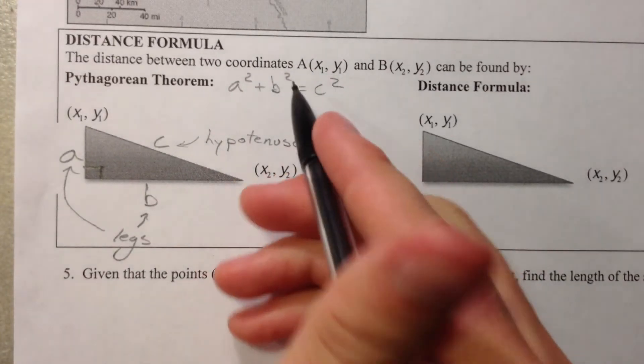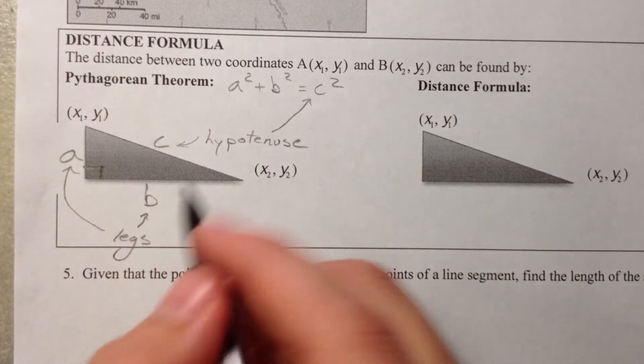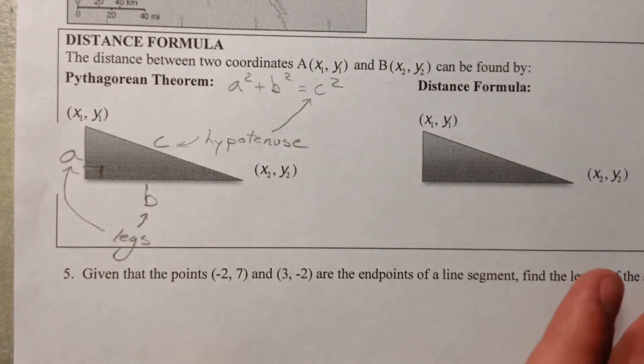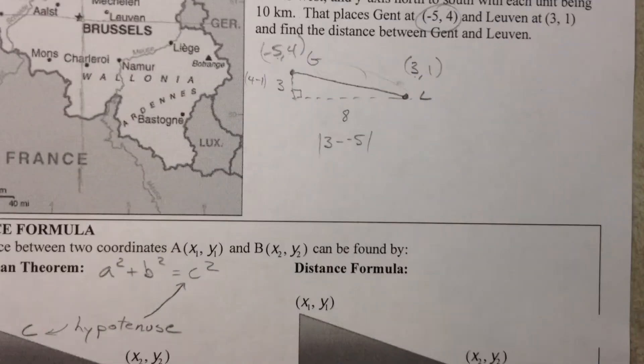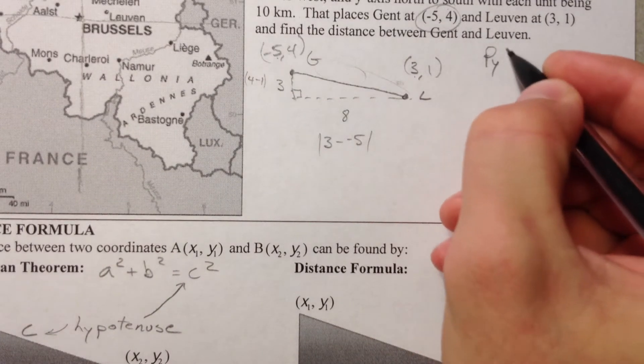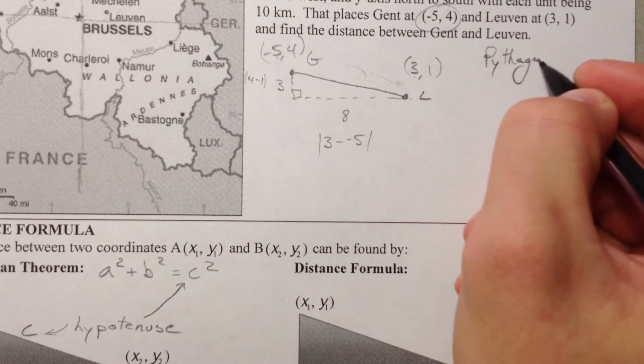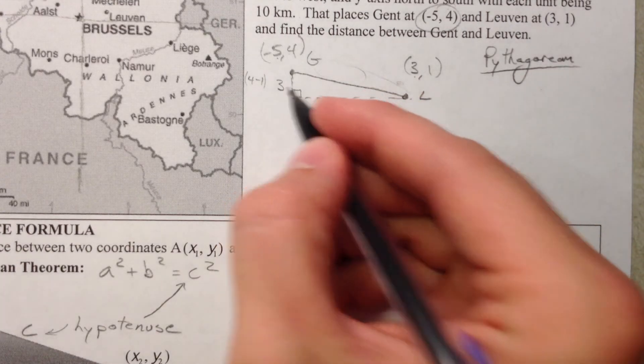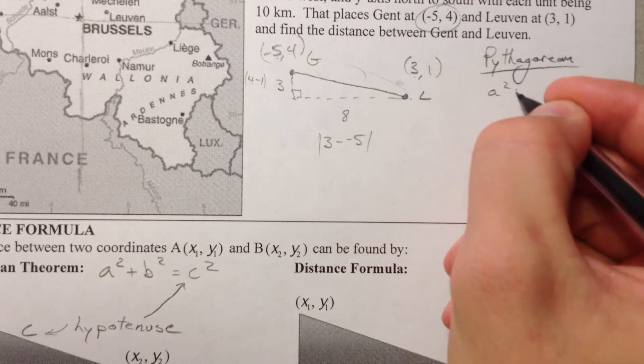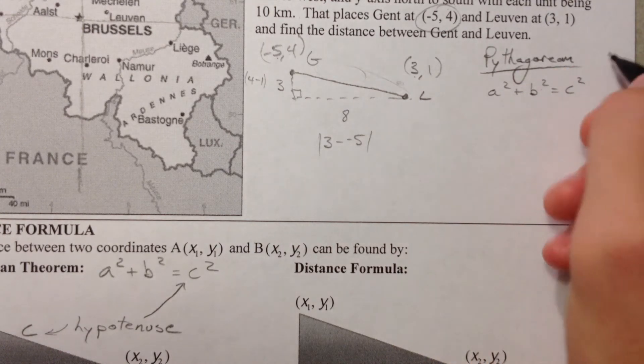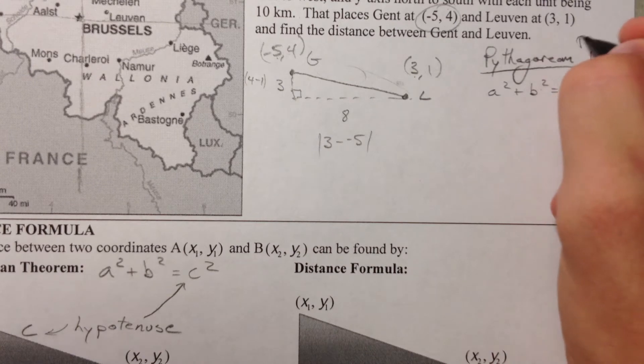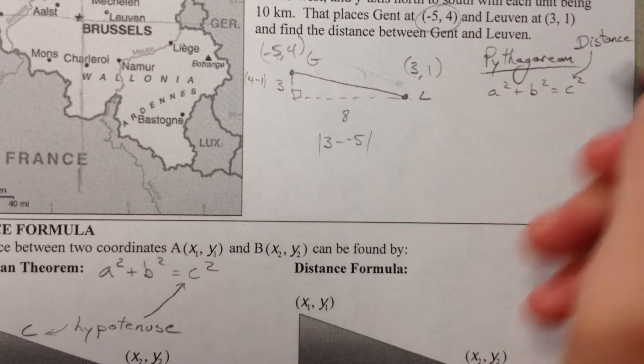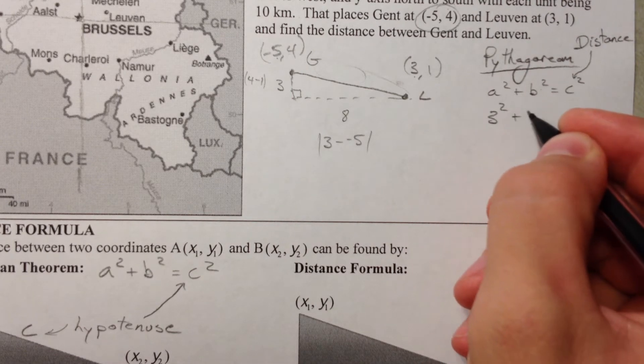And so, the hypotenuse has to be that C squared. Because it's the longest side. Sort of makes sense like that. And so, what we're going to do up here is the Pythagorean theorem is going to be 3 squared or this is going to be the distance in here. So that's going to be 3 squared plus 8 squared.